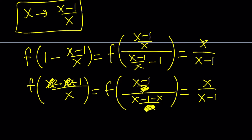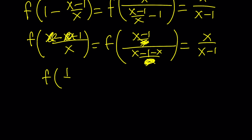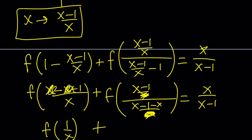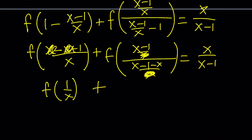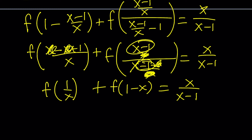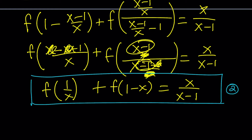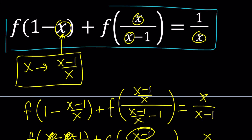From here we get f of 1 over x plus — and that's a plus sign in the original problem — and when you simplify this, these x's also cancel out, leaving us with x minus 1 divided by negative 1, which just negates it and gives us f of 1 minus x. The sum equals x over x minus 1. So this is going to be our second equation, and the original will be our first equation. We do need to come up with a third equation.